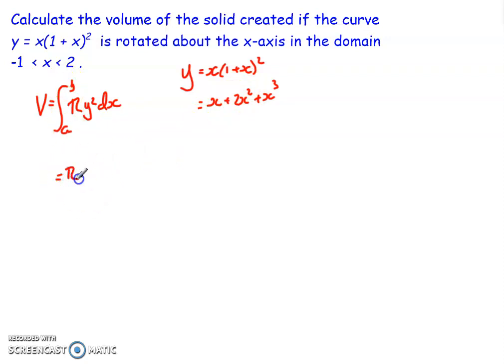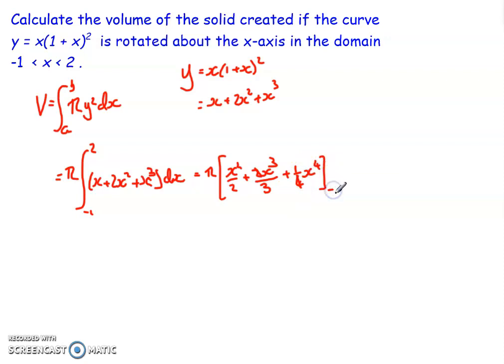So my volume is going to be given as pi times the integral from negative 1 to 2 of x plus 2x squared plus x cubed dx. Integrate it through and I get pi times x squared over 2 plus 2x cubed over 3 plus 1 quarter x to the power of 4, and that's between my two limits, negative 1 and 2. Then we just plug the limits in and calculate it through.